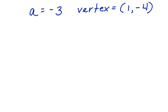Can you write an equation if a is negative 3 and the vertex is at 1, negative 4? Again, let's look at the vertex form that we were given to begin with, x minus h squared plus k. Now let's substitute the known values.